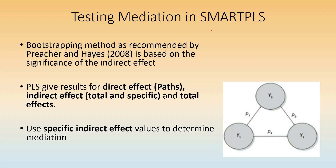To test the mediation in SmartPLS, we have to use the bootstrapping method, as we have used earlier to find the significance of the path coefficients. We are going to find the significance of the indirect effect — the indirect effect is the other name for mediation in PLS-SEM. PLS gives us results for the direct effect of path coefficients, and now we are going to see the indirect effect, the total and specific indirect effects, and also the total effect which is the sum of the path coefficient and the indirect effect. We are going to use the specific indirect values to determine the mediation.